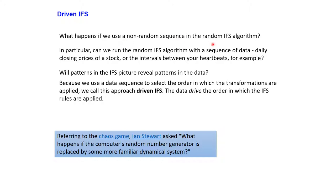The basic question was: what happens if we use a non-random sequence in the random IFS algorithm? In particular, is it possible to run the random IFS algorithm with a sequence of data — with a time series? The time series can be an earthquake seismogram, daily temperature data, daily pressure data, rainfall data, daily closing prices of a stock, intervals between heartbeats, or EEG recorded for a brain scan. There are several possibilities for the sequence of data with which we can play this random IFS chaos game.